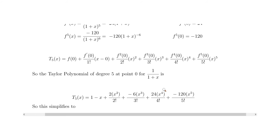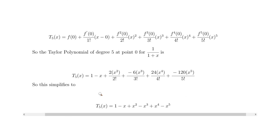Now we can simplify. 2 factorial is just 2, 3 factorial is 6, 4 factorial is 24, and 5 factorial is 120, so these all simplify out very nicely. When we simplify, we get 1 minus x plus x squared minus x cubed plus x to the 4 minus x to the 5. Notice all the signs alternate — that's because of the minus signs from the derivatives flipping the sign each time. And that's our Taylor polynomial.